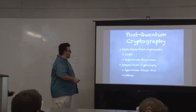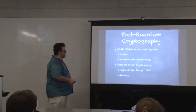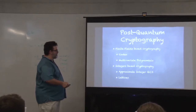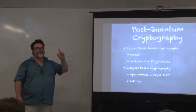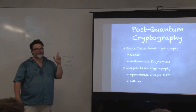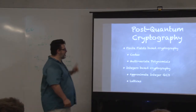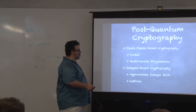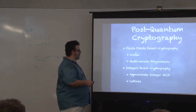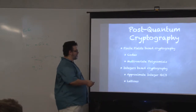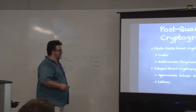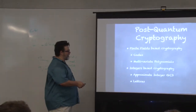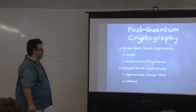I'm now moving to a second example based on finite fields, which is multivariate polynomials. I know a lot more about codes than I know about multivariate polynomials, so forgive me if my presentation is not quite as complete and accurate. But I prepared as well as I could and I hope I can give you a feeling for what is done with multivariate polynomials.